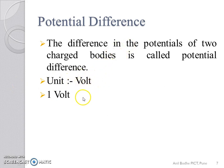One Volt is defined as the potential difference between two points if one Joule of work is done or released in transferring one Coulomb of charge from one point to the other.